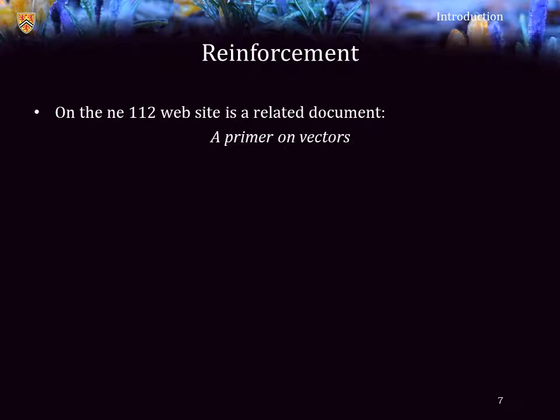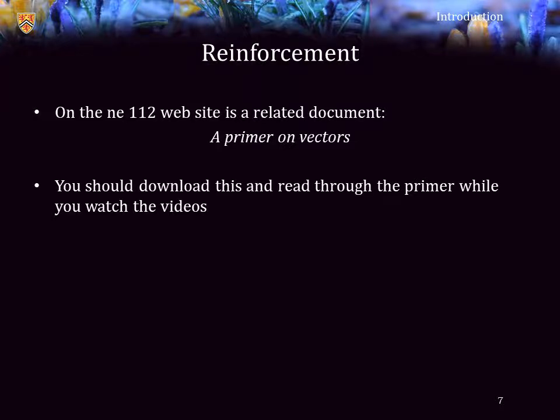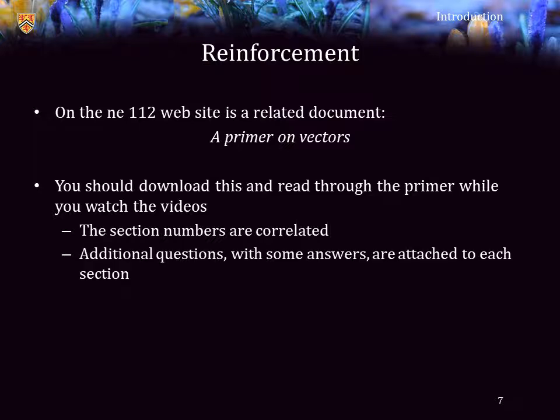On the Nanotechnology Engineering NE112 course website there is a relevant document called a primer on vectors. You should download this primer, print it out or scan it into whichever electronic media you use, and go through that primer while you are watching the videos. The section numbers are correlated, so when you're watching topic 2.6 you can follow along in the primer in section 2.6. At the end of each of these sections in the primer are questions with some answers which you can attempt to make sure you understand this course material — if you do not do them, you will not remember. Please do these questions.